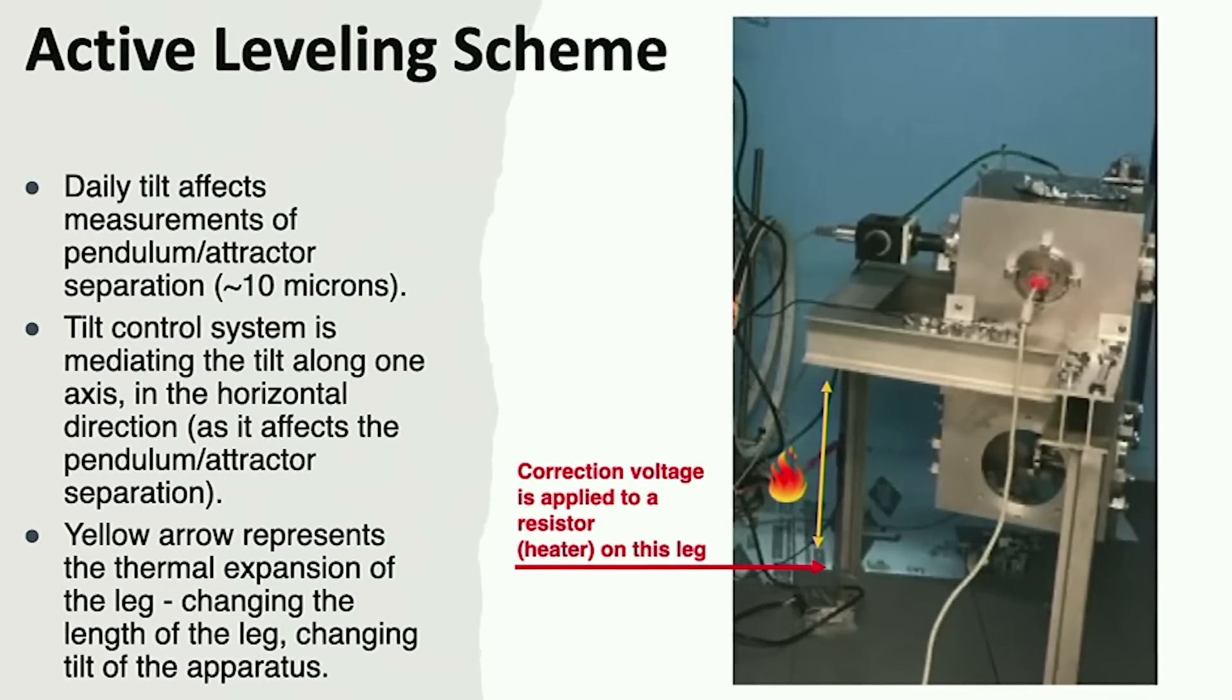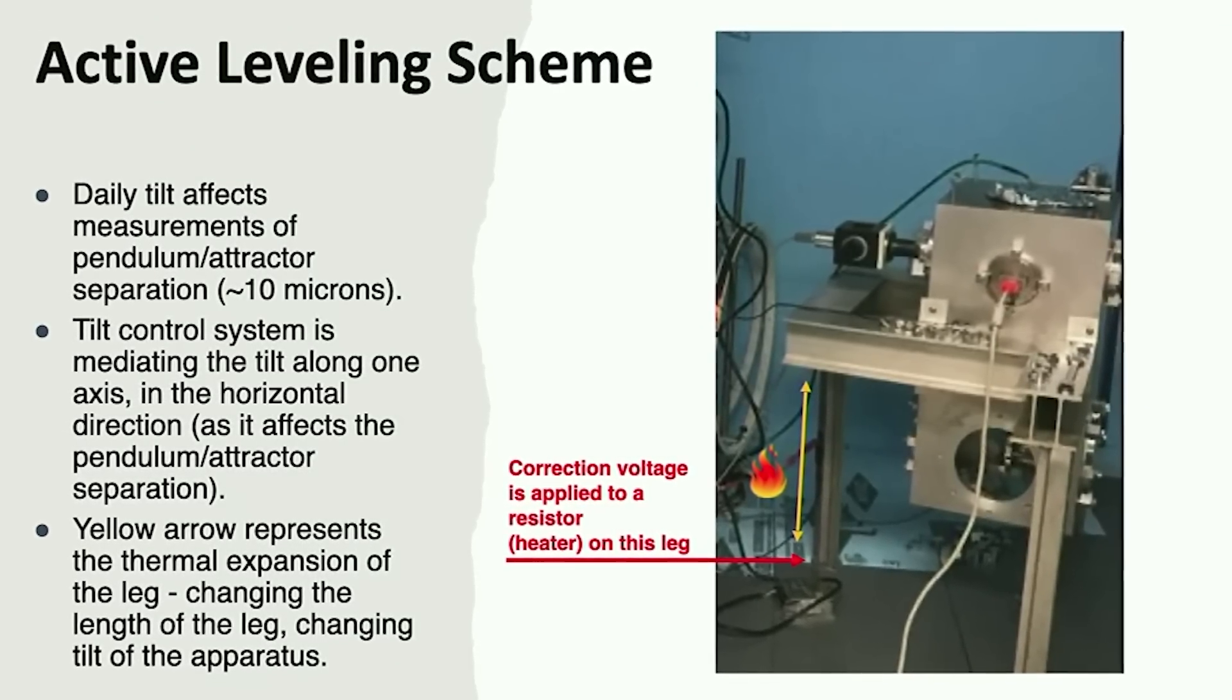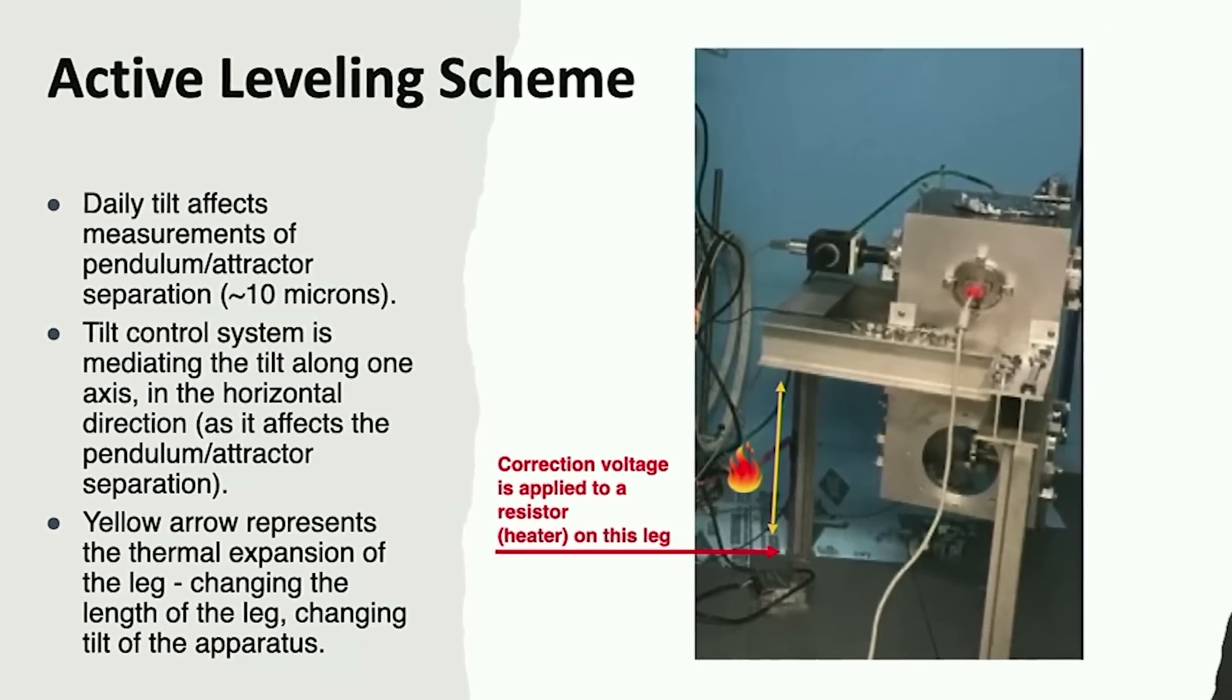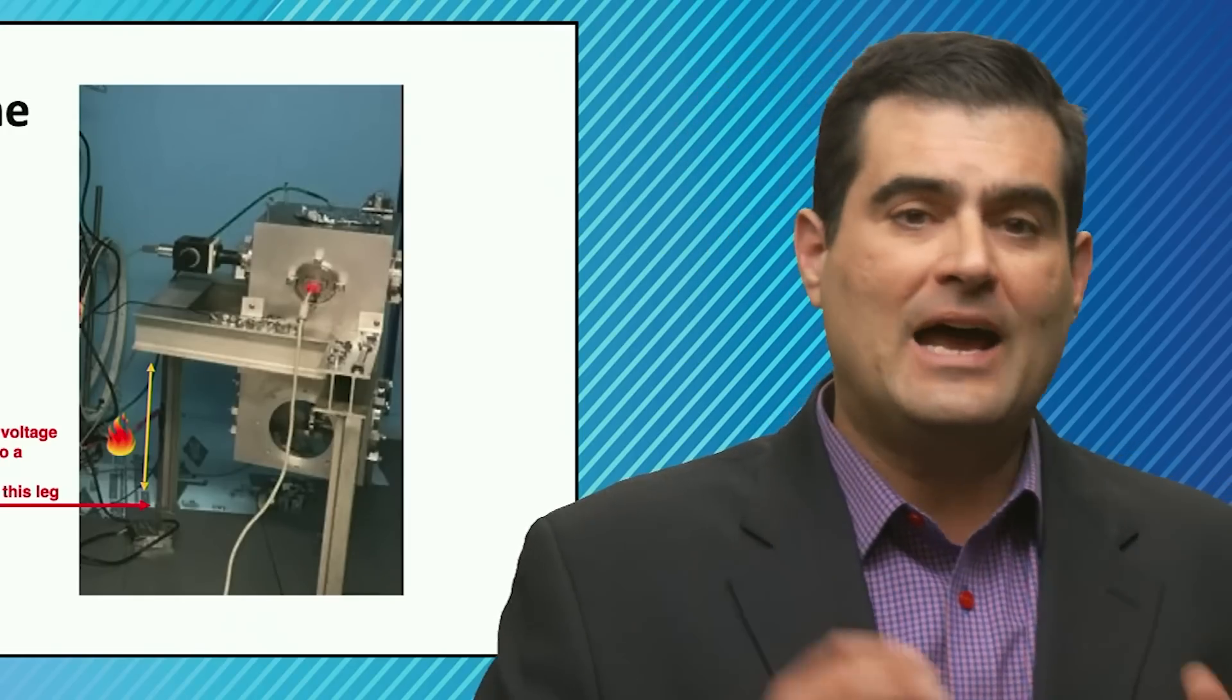That is the key enabling device at some level. The tilts in the apparatus can affect the measurement at the micron level, and that's very important for ruling out so-called systematic errors—errors in the system, not in the fundamental forces.